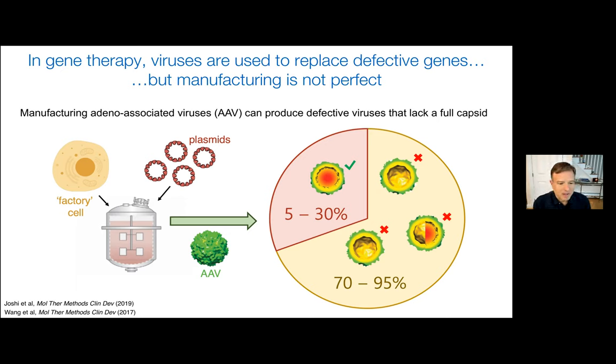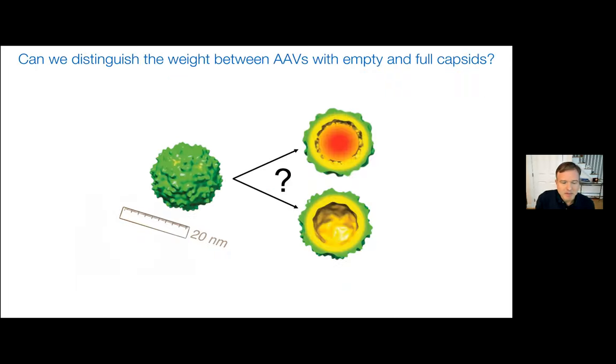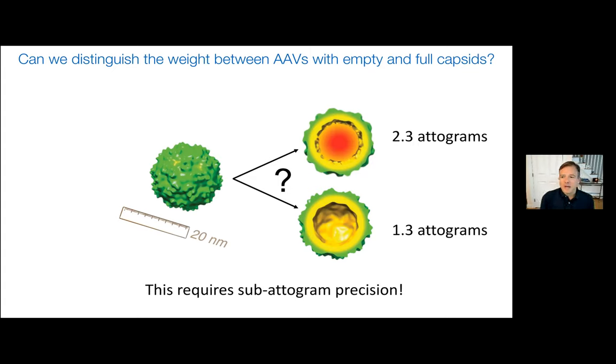One of the holy grails in the manufacturing field would be an inline tool for being able to quantify what fraction of viruses have full, complete, intact capsids, and use that information in real time to control processing parameters in a closed-loop system to optimize the product. If you think about these viruses from a size point of view, they're the same whether they have the DNA capsid inside or not. But from the mass point of view, these viruses weigh a couple of attograms, and the difference between a full and empty capsid is about one attogram for the DNA inside.